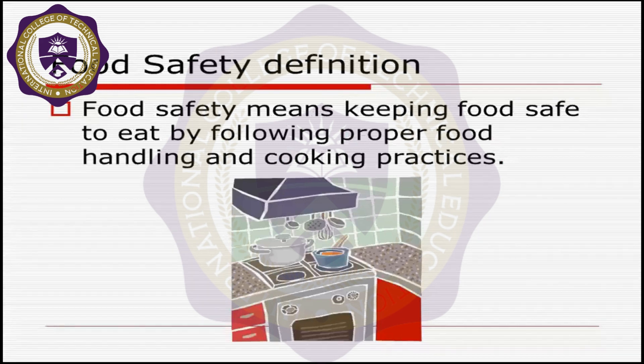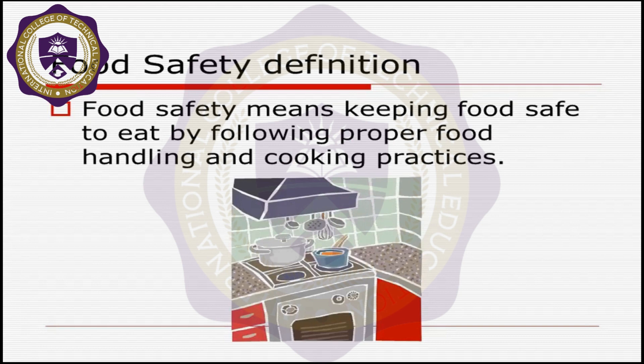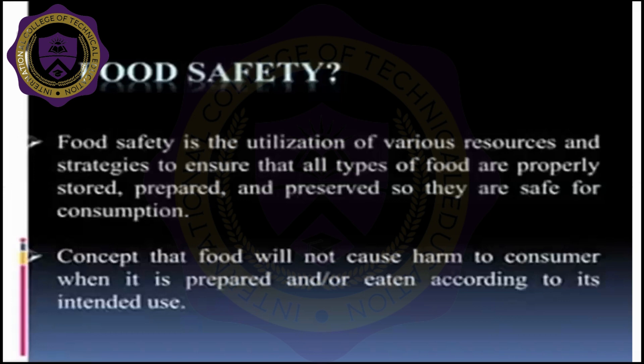Food safety means keeping food safe to eat by following proper food handling and cooking practices. The main idea of food safety is to keep the surroundings safe where the food is being kept, and how you make the food using different ingredients. First of all, you have to wash your hands before eating or preparing a meal.